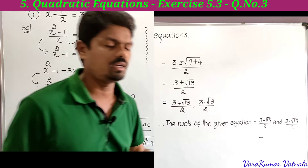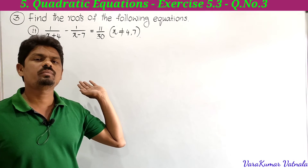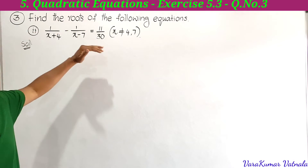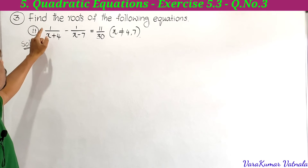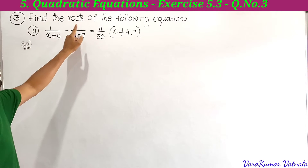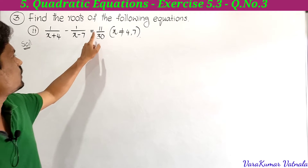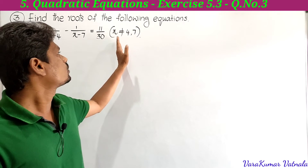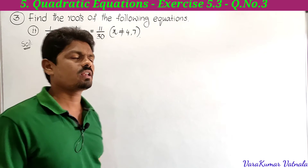Next we solve the second bit of the third problem. The equation given is 1 by x plus 4 minus 1 by x minus 7 is equal to 11 by 30, where x is not equal to 4 or 7.